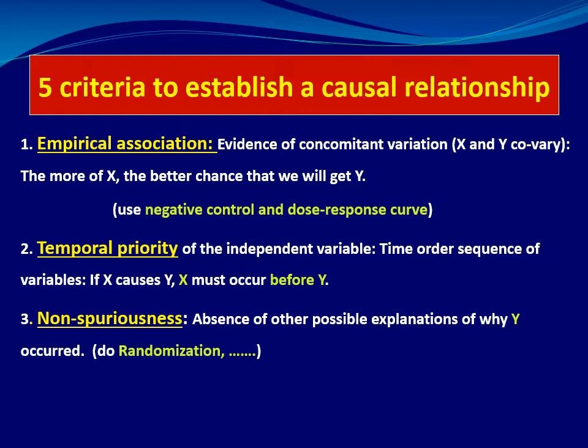The second criterion is the temporal priority of the independent variable X. If we claim that X will produce Y, then X must occur before Y. This time-order sequence between X and Y is very important.